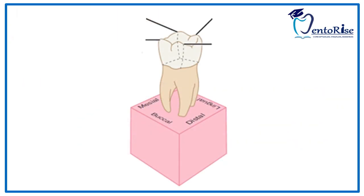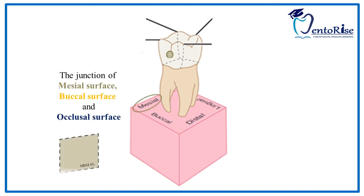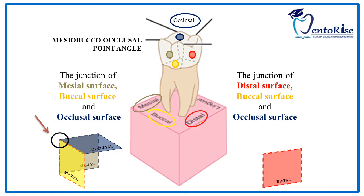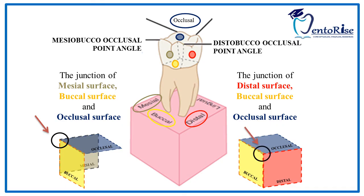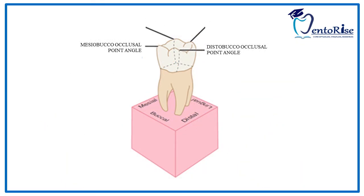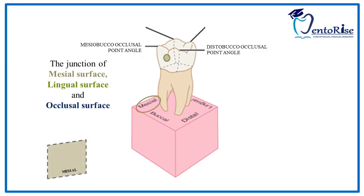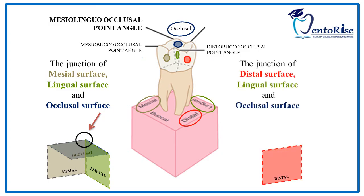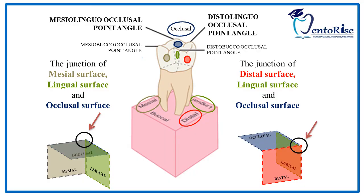Coming to the point angles of posterior teeth, the junction of the mesial surface represented in grey, buccal surface represented in yellow, and occlusal surface represented in blue forms the mesio-bucco-occlusal point angle. In the similar way, the junction of the distal surface represented in red, buccal surface represented in yellow, and occlusal surface represented in blue forms the disto-bucco-occlusal point angle. In the same way, the junction of the mesial surface represented in grey, lingual surface represented in green, and occlusal surface represented in blue forms the mesio-linguo-occlusal point angle. The junction of the distal surface represented in red, lingual surface represented in green, and occlusal surface represented in blue forms the disto-linguo-occlusal point angle.